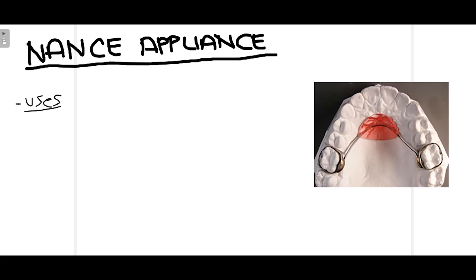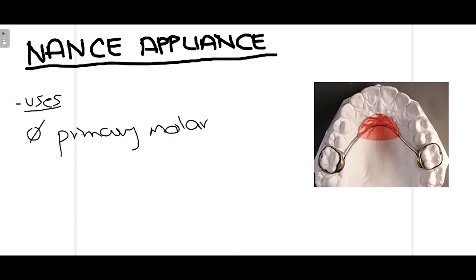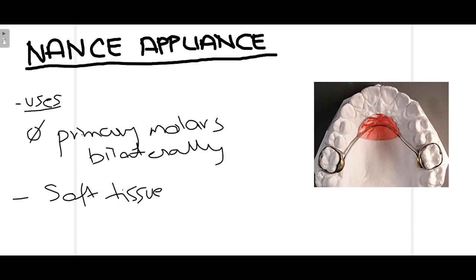Lastly, the Nance appliance. The molars are banded and a U-shaped acrylic button rests at the rugae area of the maxilla. The Nance appliance is used when primary molars have been lost bilaterally and there is a risk that the permanent molars may move mesially. It also prevents mesial migration of these molars to some extent. One disadvantage is that it can cause soft tissue irritation.